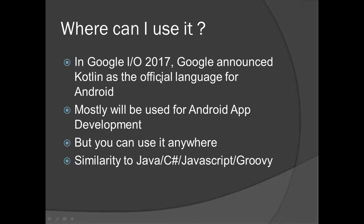I am sure in the near future most developers will switch to Kotlin, so it is a good time to learn Kotlin. As I said, it will mostly be used for Android app development, but you can use it anywhere — it is not limited to Android apps. You can use it on the web, make desktop applications, and use it anywhere you can use Java. Kotlin is similar to Java, C#, JavaScript, and Groovy.